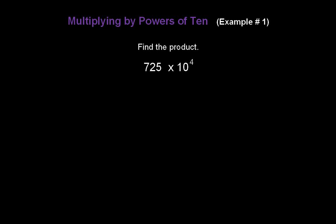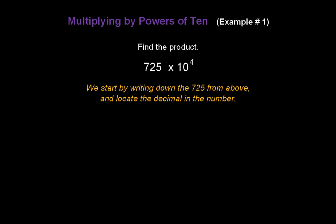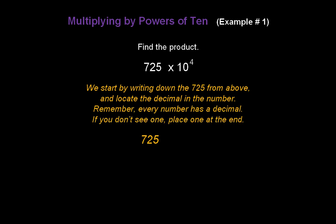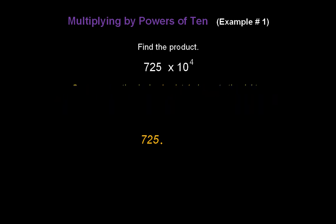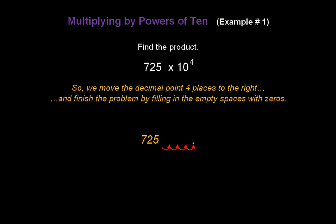Let's do another problem. Find the product of 725 times 10 to the fourth. We start by writing down 725 and locate the decimal — remember, every number has a decimal, and if you don't see one, it's at the end. The exponent 4 tells us how many times to move the decimal point to the right, since we're multiplying. So we move the decimal point four places to the right: one, two, three, four. Fill in the empty spaces with zeros. 725 times 10 to the fourth is 7,250,000.